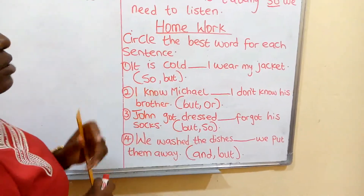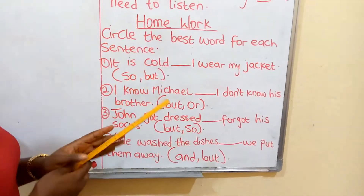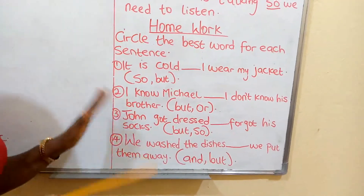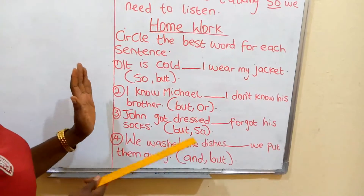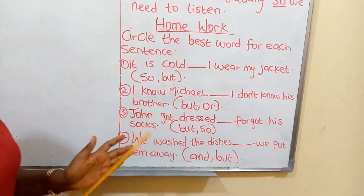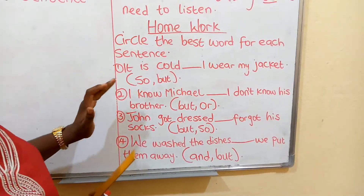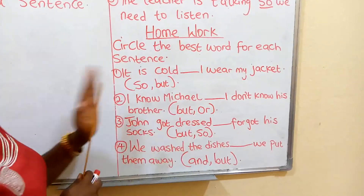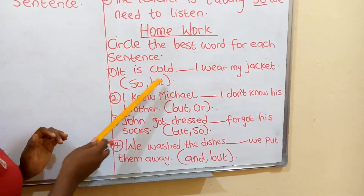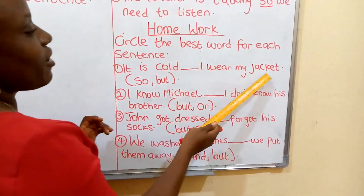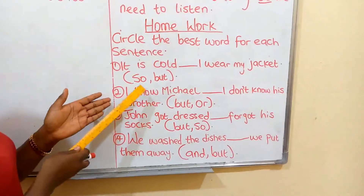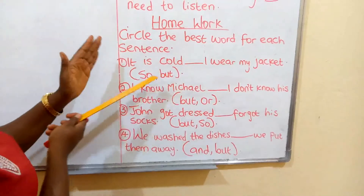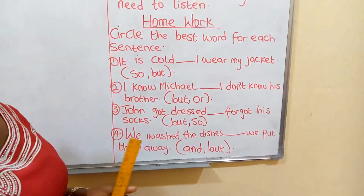For our homework this week, the instruction says: circle the best word for each sentence. You will see two words in brackets. Pick the best word that suits the sentence. For number one: 'It is cold — I wear my jacket.' In brackets we have 'so' and 'but'. Pick one word that suits this sentence and write it there.